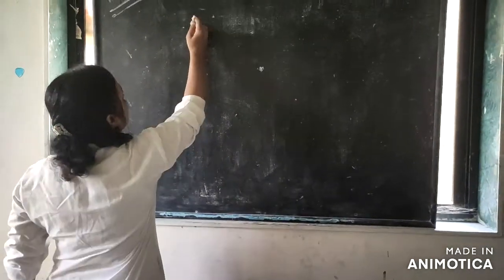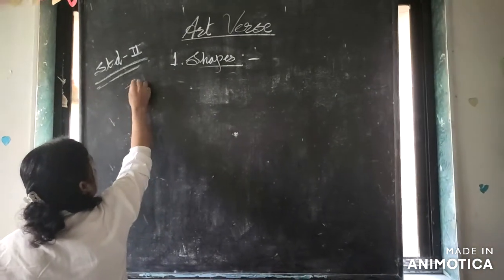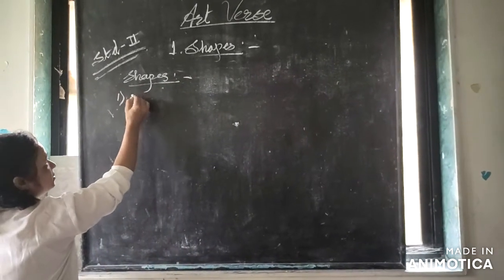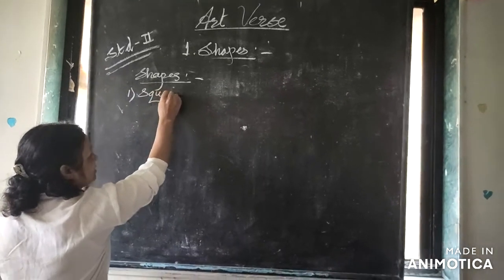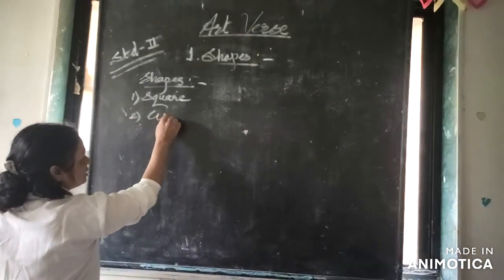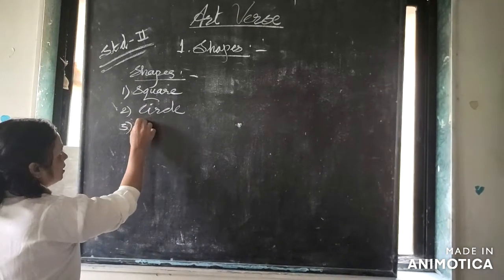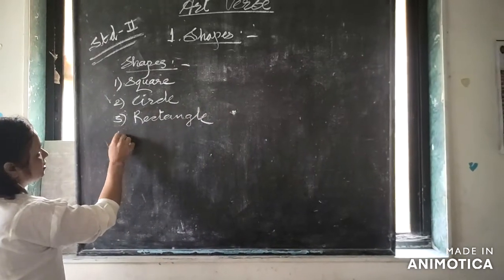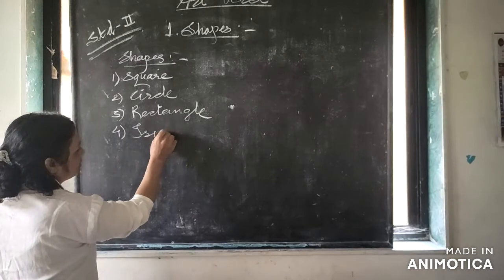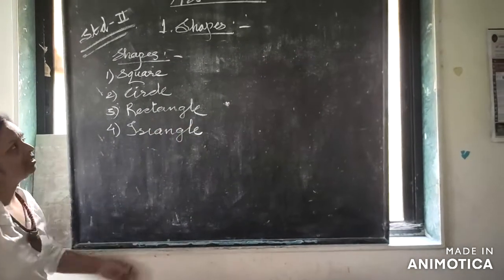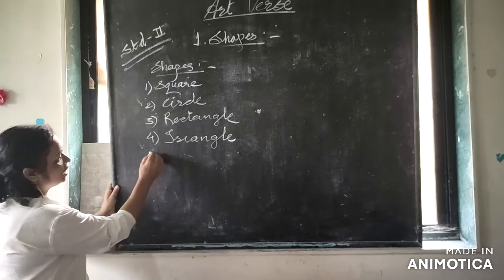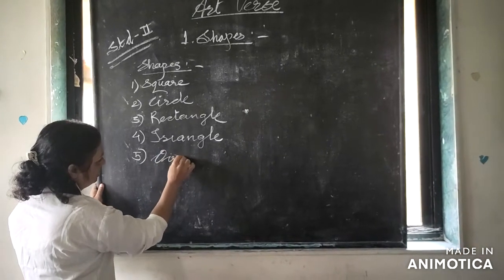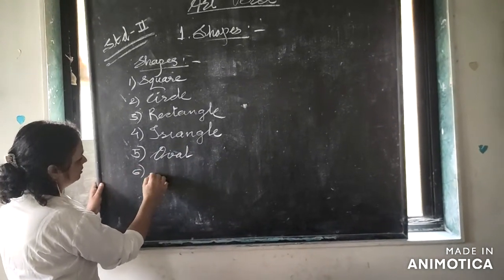Now look at the lesson. You already learned different types of shapes — like squares, circles, rectangles, and round. In this lesson, we are going to learn 2 more new shapes, named oval and semi-circle.